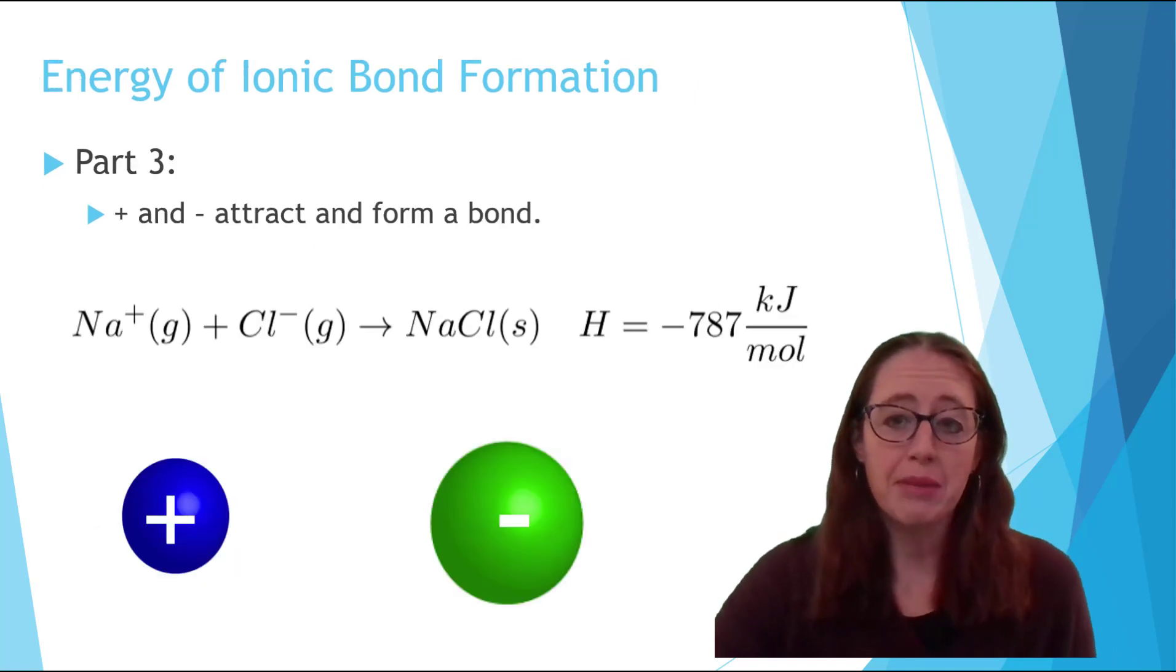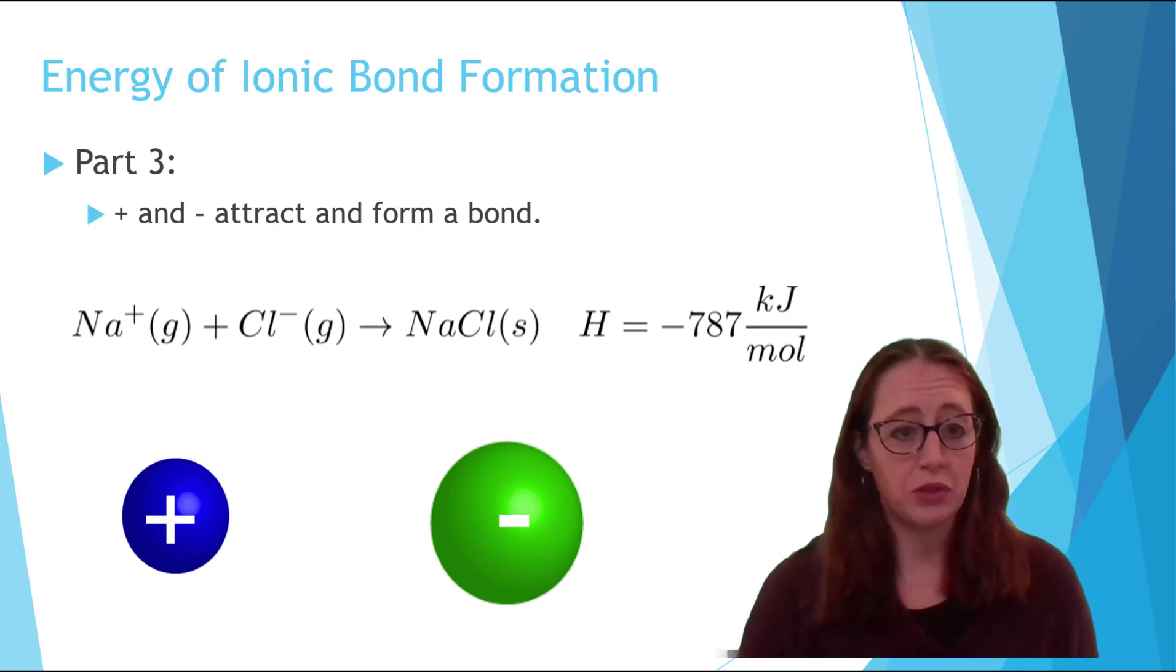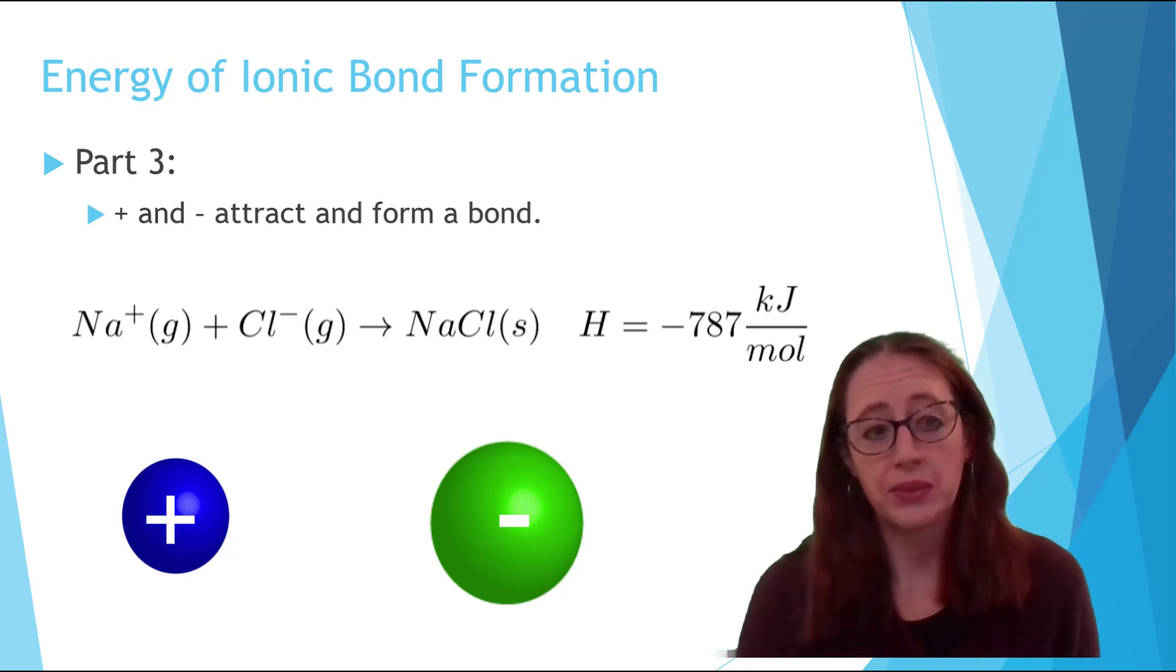For the final step, the positive and negative ion are going to attract each other. This also changes the energy and is called the lattice energy. In this case, it changes by a negative 787 kilojoules per mole because they are attracted to each other. So this negative means that energy is released.